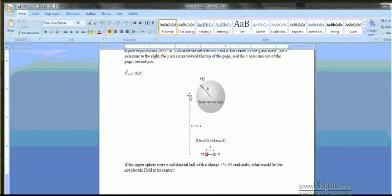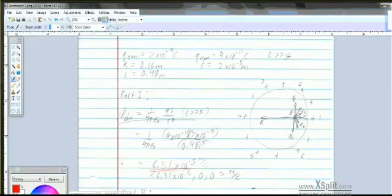So the electric field due to the metal ball is zero, zero, zero newtons per coulomb. I don't know why I keep saying nanocoulombs. But anyway, it's zero, zero, zero newtons per coulomb on the inside of the metal ball.